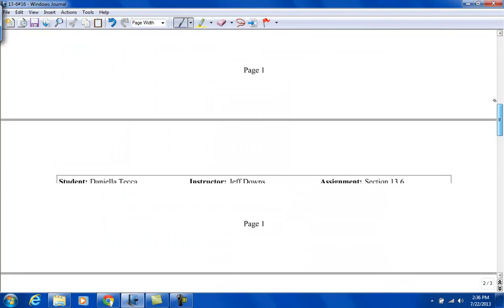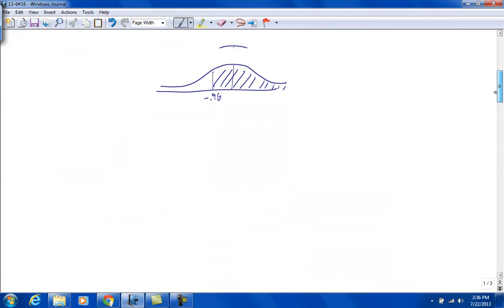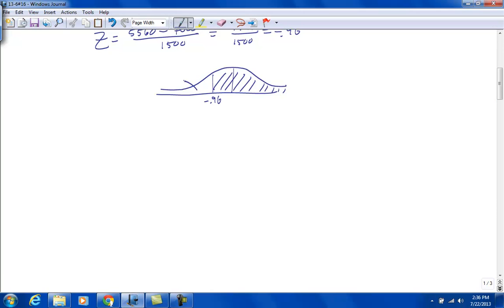Yeah, okay, so 0.1685. So that means this part is 0.1685. 1 minus 0.1685 is 0.8315. So that means this region here is 0.8315.